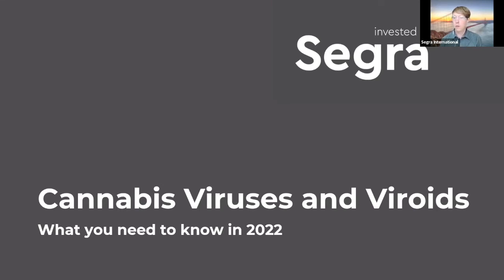We now find ourselves at a critical juncture where every cannabis operator must develop systems to manage the challenges of plant viruses and viroids. This is no easy task, as the scientific understanding is in its infancy — including key questions like how to effectively detect them, which ones cause economic damage, and what preventative practices are best. Today's event represents SEGRA's attempt to support open conversation on this topic. We'll kick off with Dr. Oliver Kria's presentation, followed by a roundtable discussion and a Q&A session.